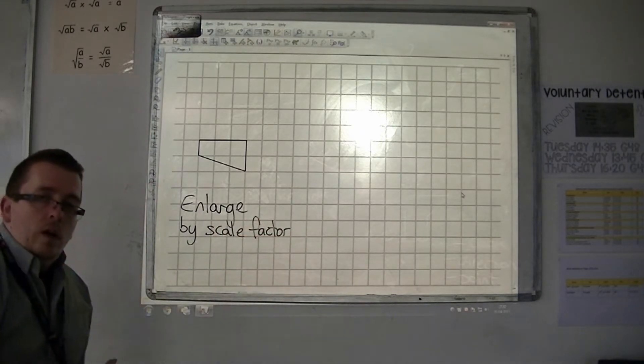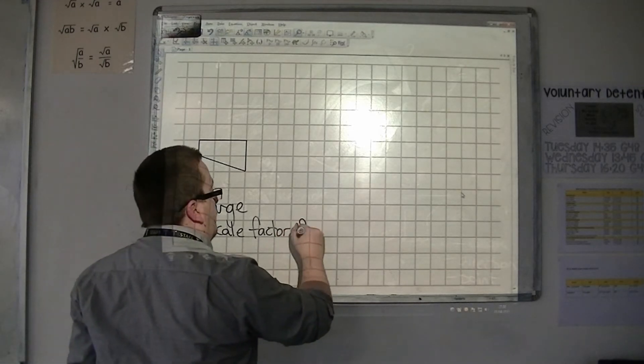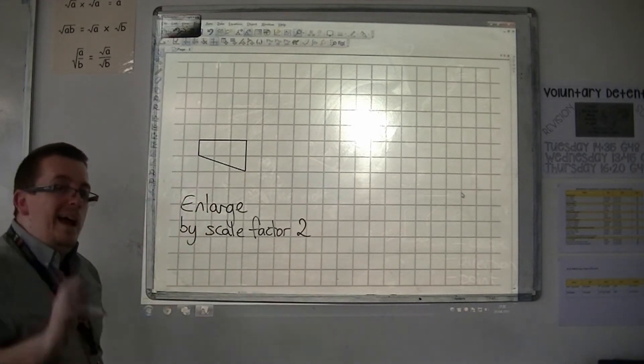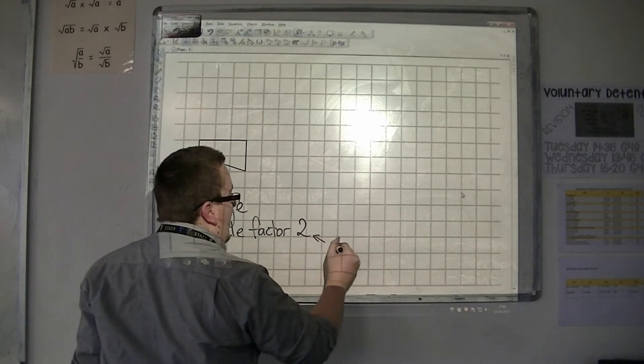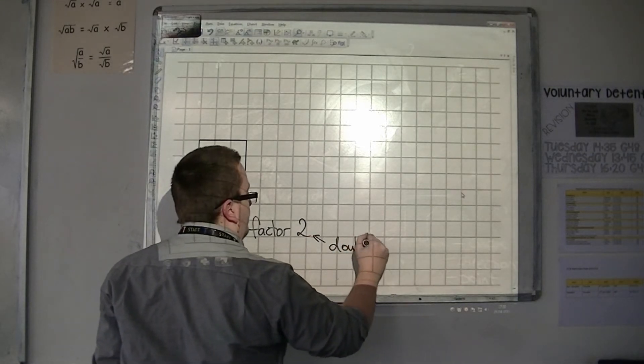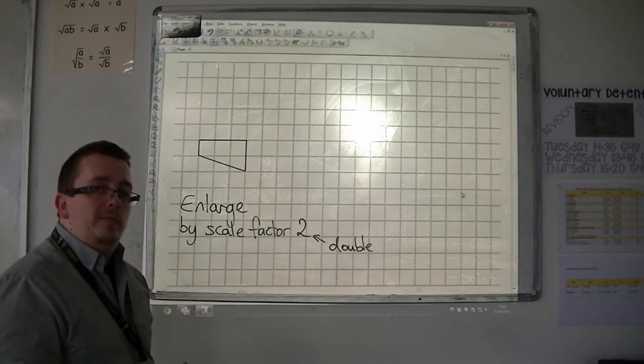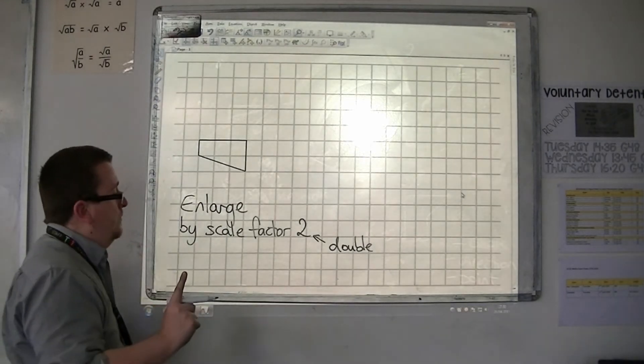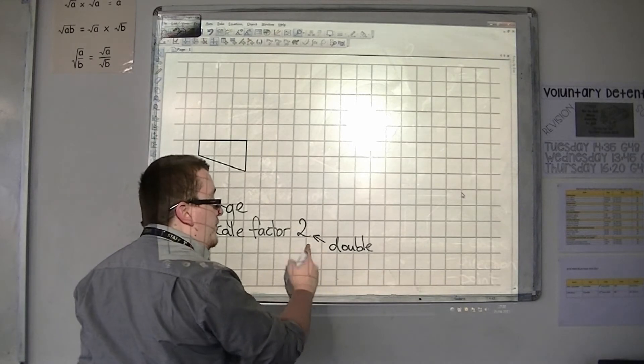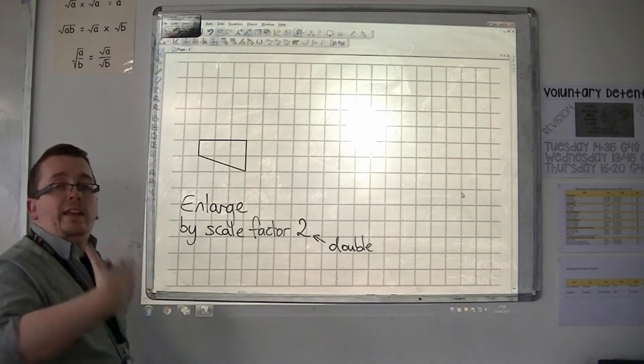So, I might enlarge by a scale factor of 2 for example. And what that means is that all the lengths double. All of the lengths double. Lengths, mind you. If it was scale factor 3, then all of the lengths will treble.